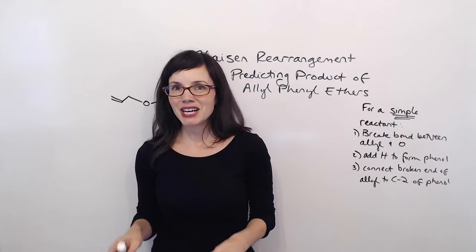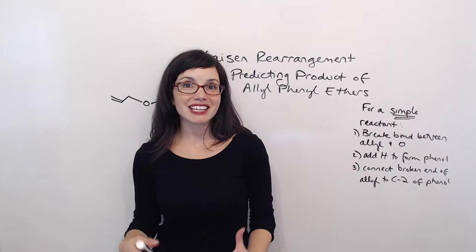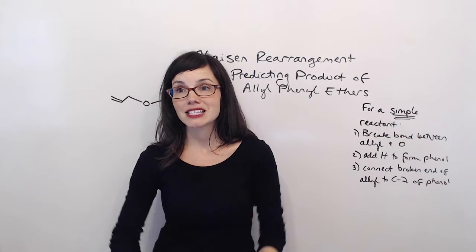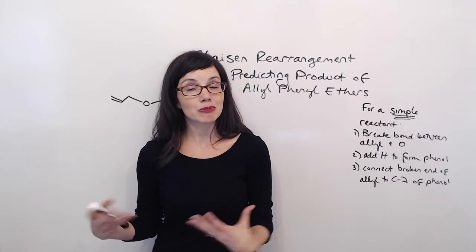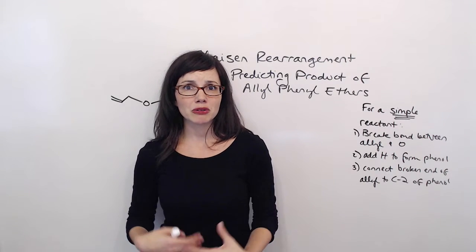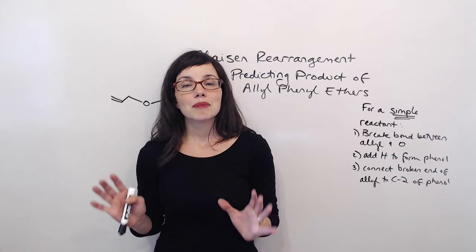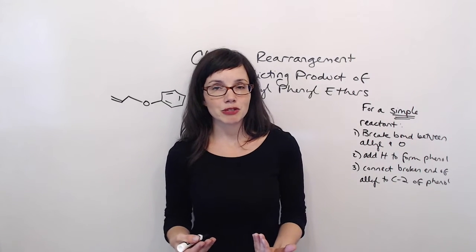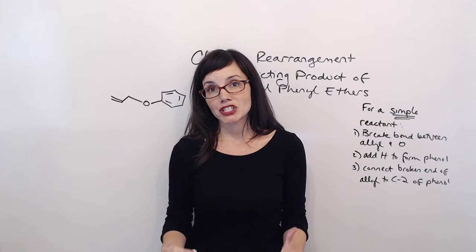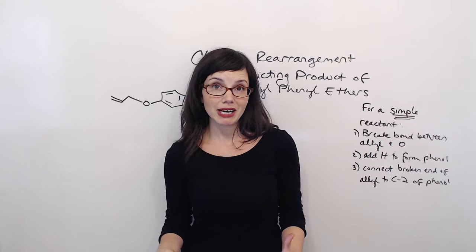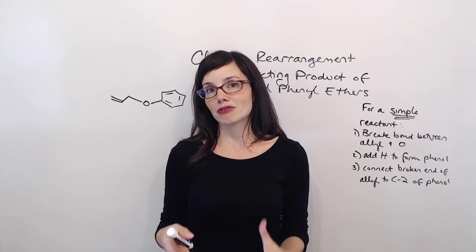And I'm not usually that kind of tutor. I'm all about teaching you a quick and easy way to do the prediction of products, so that when you see a question on your test that just says 'predict the product,' you want to be able to do it in just a couple of seconds without thinking your way through the mechanism. But I promise, for the Claisen rearrangement, it's really difficult to do an accurate prediction of products without doing the full mechanism, unless you have the most simple type of reactant.